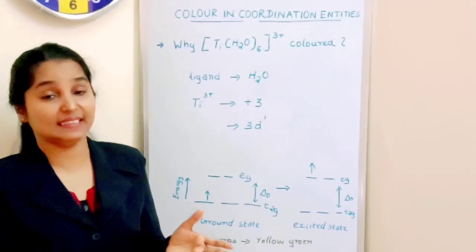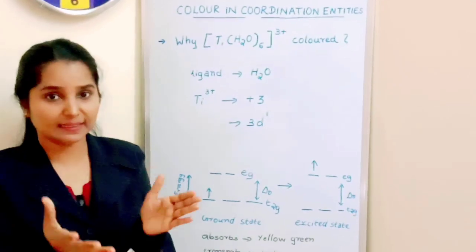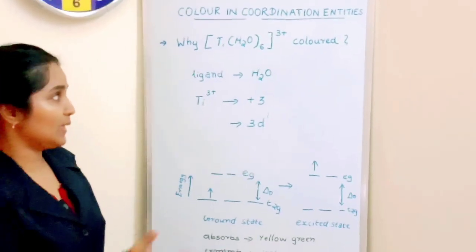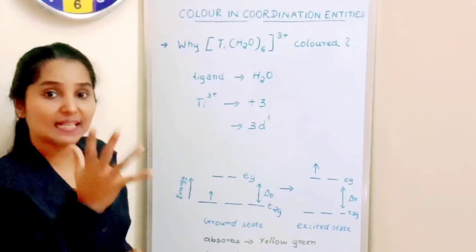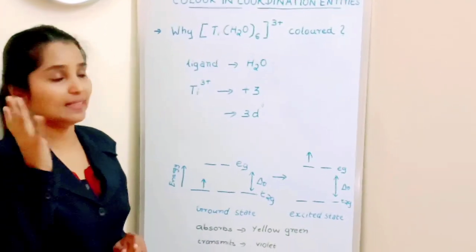Why do they appear colored? When they appear colored, we will try to explain by taking an example. Why is Ti(H2O)6^3+ colored? Why is it appearing in color?